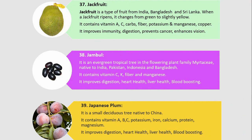Number 37. Jackfruit. Jackfruit is a type of fruit from India, Bangladesh, and Sri Lanka. When a jackfruit ripens, it changes from green to slightly yellow. It contains vitamin A, C, carbs, fiber, potassium, manganese and copper. It improves immunity, digestion, prevents cancer, and enhances vision.